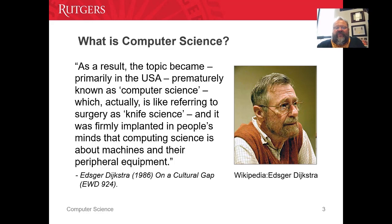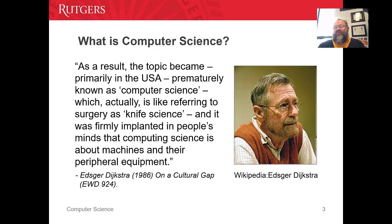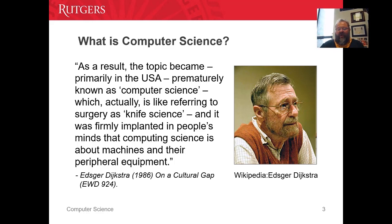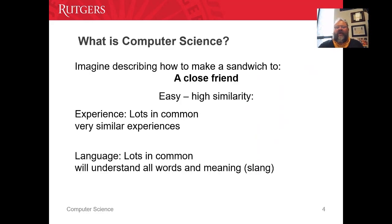A famous programmer once said computer science has as much to do with computers as telescopes have to do with astronomy. The point is that computers are just a tool — the tool we use in order to solve problems — and computer science is really more about solving problems.